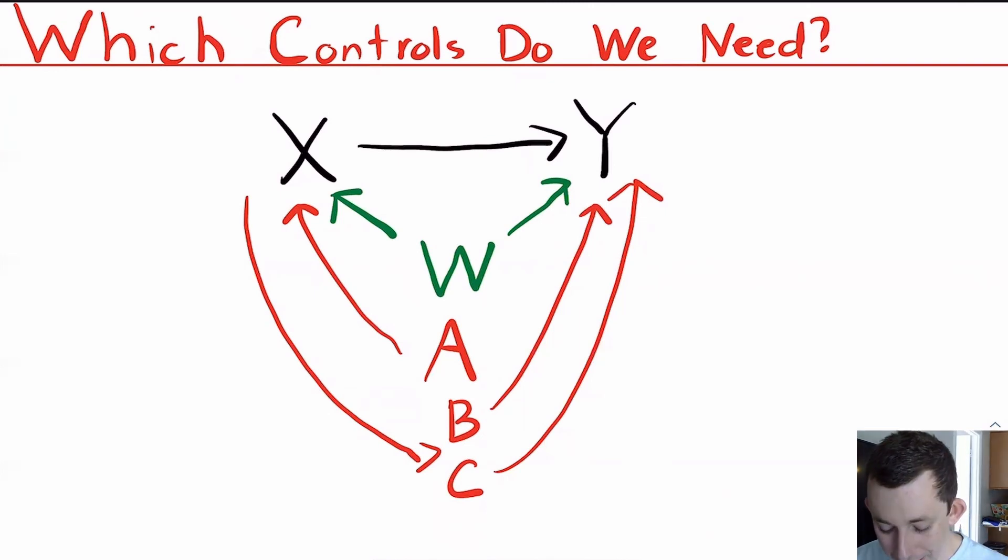C is an especially bad control because X causes Y through C. So if we were to control for C, we would be misspecifying the relationship between X and Y. And we do not want to get a bad estimate for the effect of X on Y. But if I control for C, that's going to happen. So generally, as a rule of thumb, we don't want to control for anything downstream of X, we don't want to control for anything that X causes, we definitely don't want to control for something where X causes Y through that other variable. We only want to control for W which confounds this relationship.